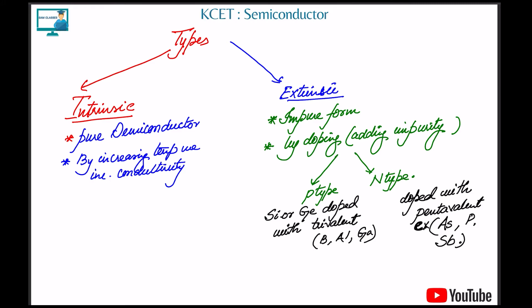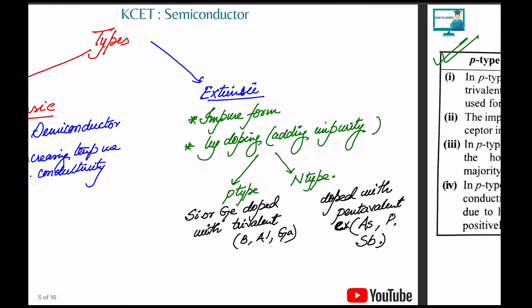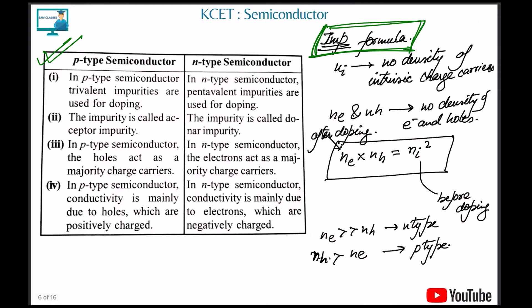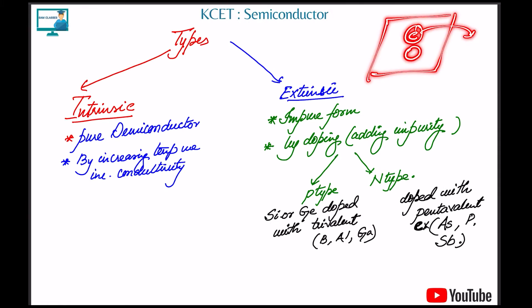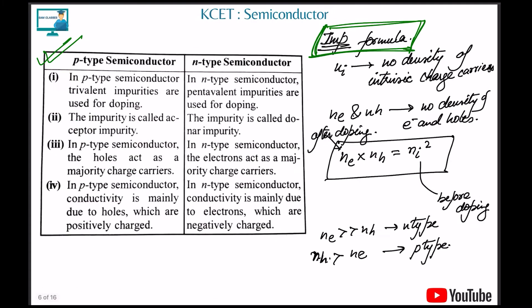A hole is nothing but a vacant empty space created by an electron that has left its place — that's simple. Now what is the difference between p-type and n-type? You can take screenshots of this and go through the theory.